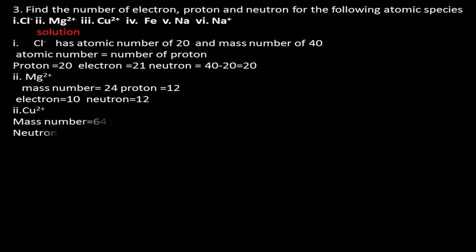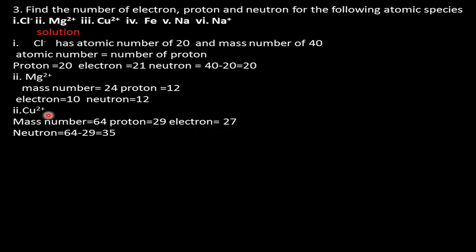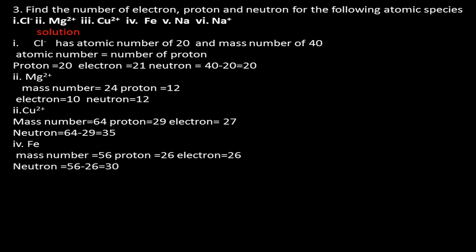Problem 3(iii): For copper 2+ (Cu²⁺), mass number = 64 and atomic number = proton number = 29. Since copper lost two electrons, electron count = 29 − 2 = 27. Neutron number = mass number − proton number = 64 − 29 = 35 neutrons.